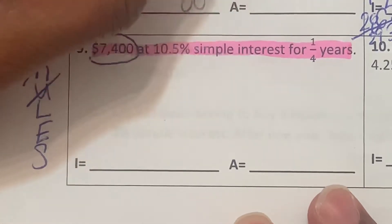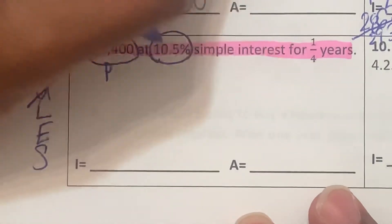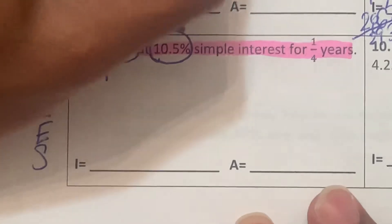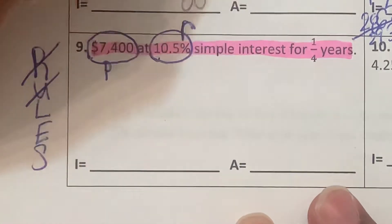Now circle these numbers. $7,400, this is the principal. 10.5%, this is going to be the rate.